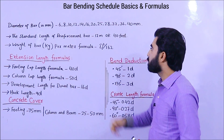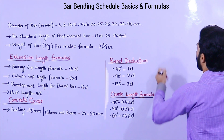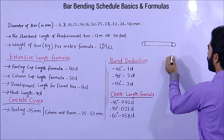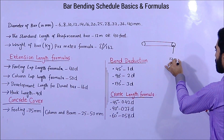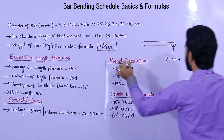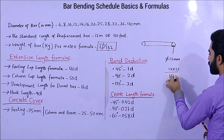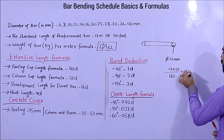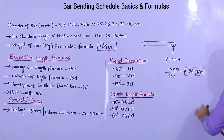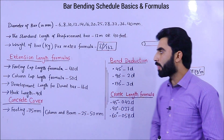The third one is the weight of bar in kg per meter. The formula is D squared divided by 162, where D is the diameter of the steel rod. For example, if the diameter is 12mm, you calculate 12 × 12 ÷ 162 and you get 0.88 kg per meter. If the bar is 2, 3, 5, or 12 meters long, you multiply accordingly.